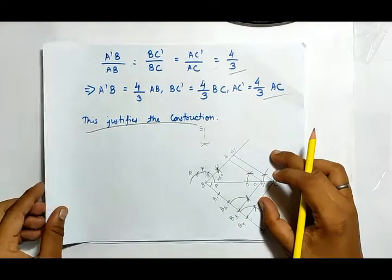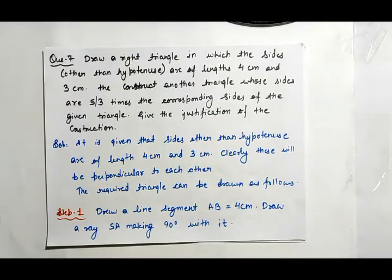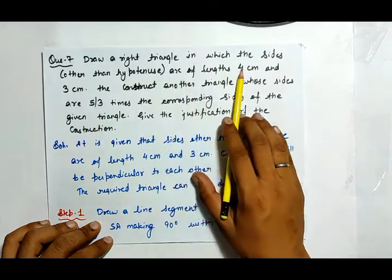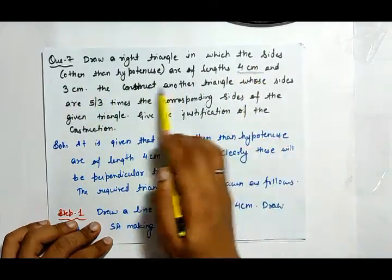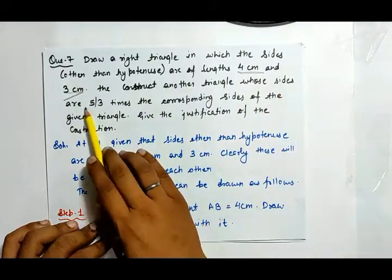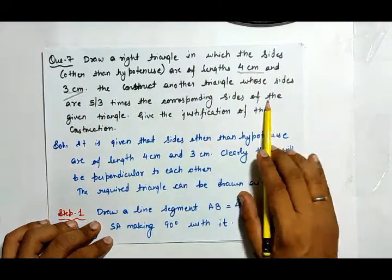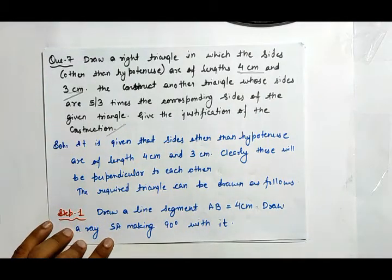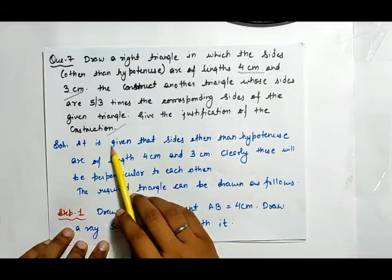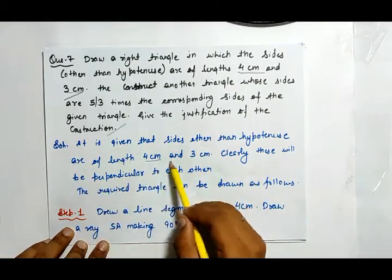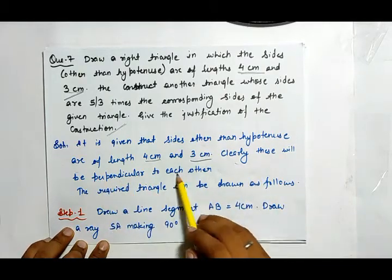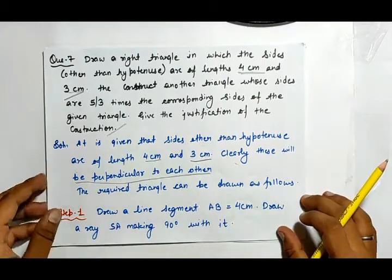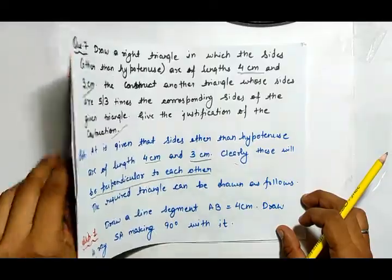Now let's move to question number 7: draw a right angle triangle in which the sides other than the hypotenuse are of length 4 centimeters and 3 centimeters, then construct another triangle whose sides are 5/3 times the corresponding sides of the given triangle, and give the justification of the construction. The sides of 4 cm and 3 cm will clearly be perpendicular to each other.